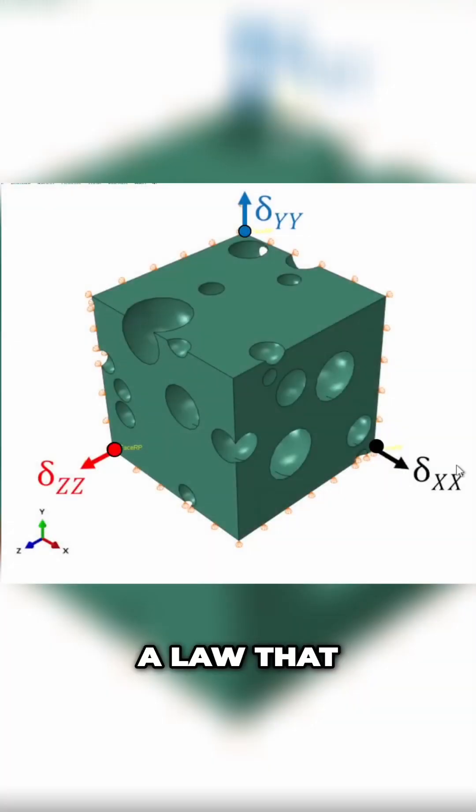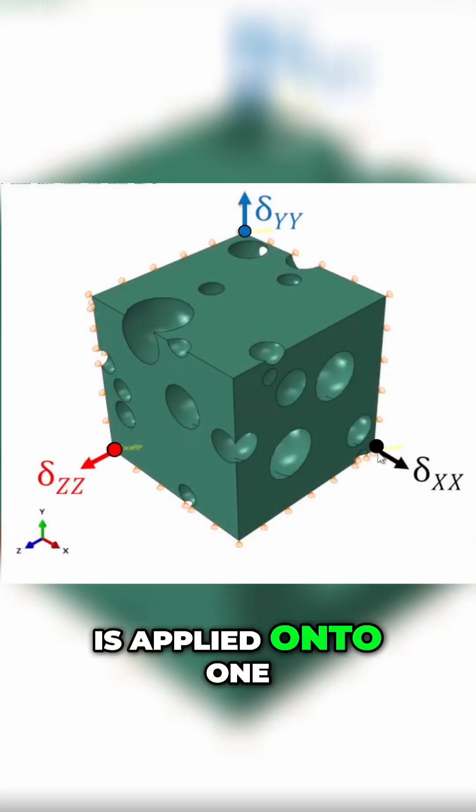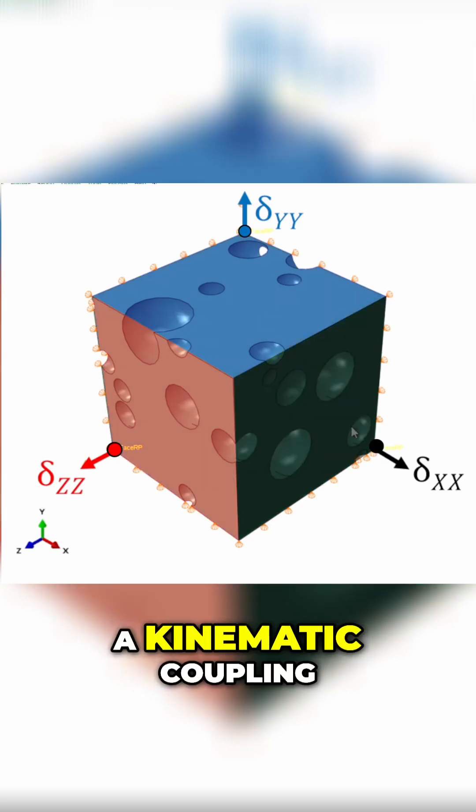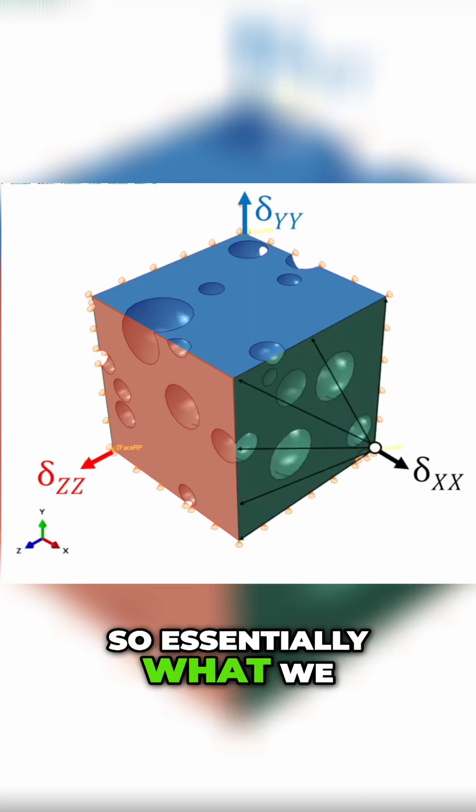How do we translate a load applied to one single node at these three corners to actually deform those faces? This brings in the idea of a kinematic coupling. Essentially, what we need to do here is apply a coupling between the corner node and the faces.